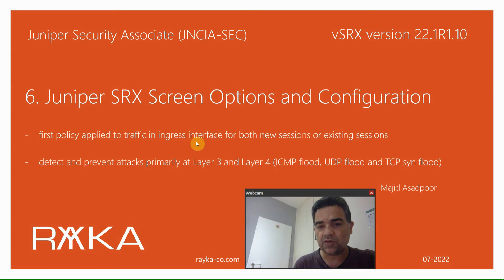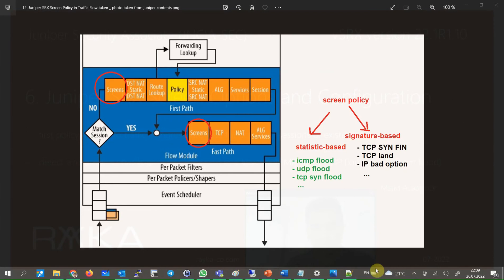The screen policy is the first policy applied to traffic in the ingress direction of the interface for both new sessions and existing sessions. If you remember from the section on Juniper SRX traffic flow, the target of a screen policy is to detect and prevent attacks primarily at layer 3 and layer 4.